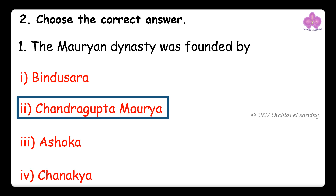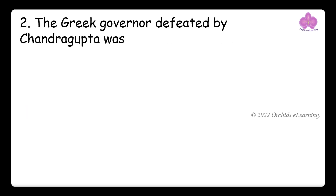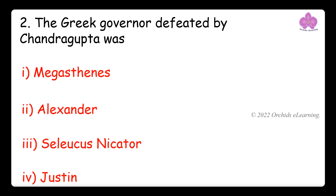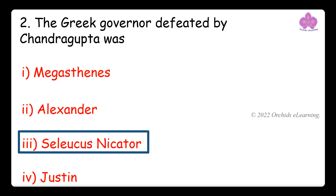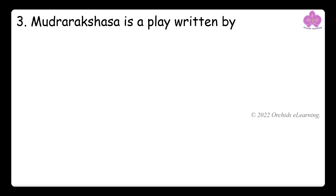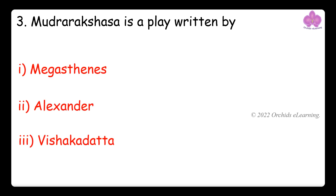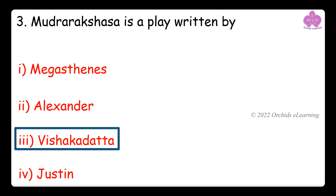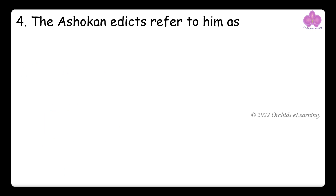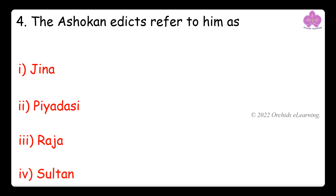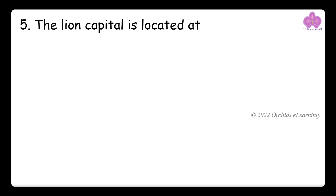The Ashokan pillars are highly marveled. Choose the correct answer: The Mauryan dynasty was founded by Chandragupta Maurya. The Greek governor defeated by Chandragupta was Seleucus Nicator. Mudrarakshasa is a play written by Vishakhadatta. The Ashokan edicts refer to him as Piyadasi.